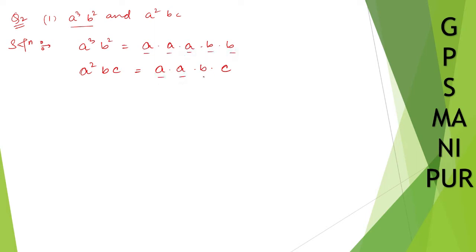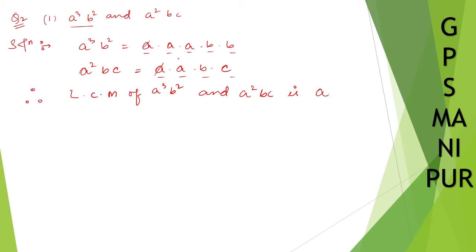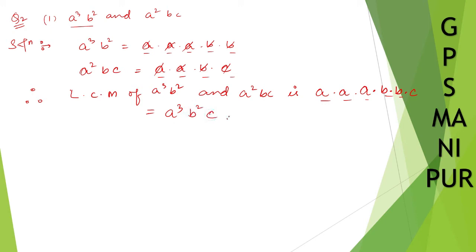A cube means three a's, b square means two b's, a square means two a's, and b c. Therefore, the LCM of a cube b square and a square b c: a is common — write down a, another a common — write down a, the third a is alone — write down a. B is common — write down b, the remaining b is alone — write it down. C is also alone — write down c. So the answer is a cube, b square, c. This is the required LCM.